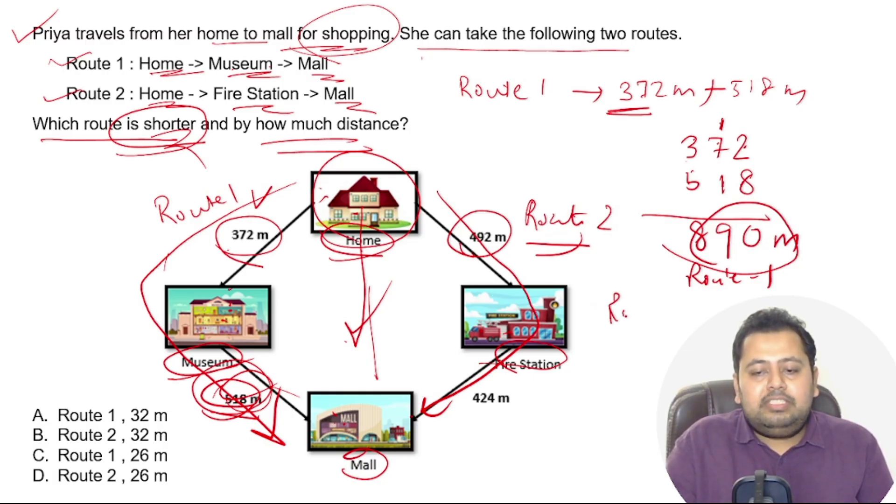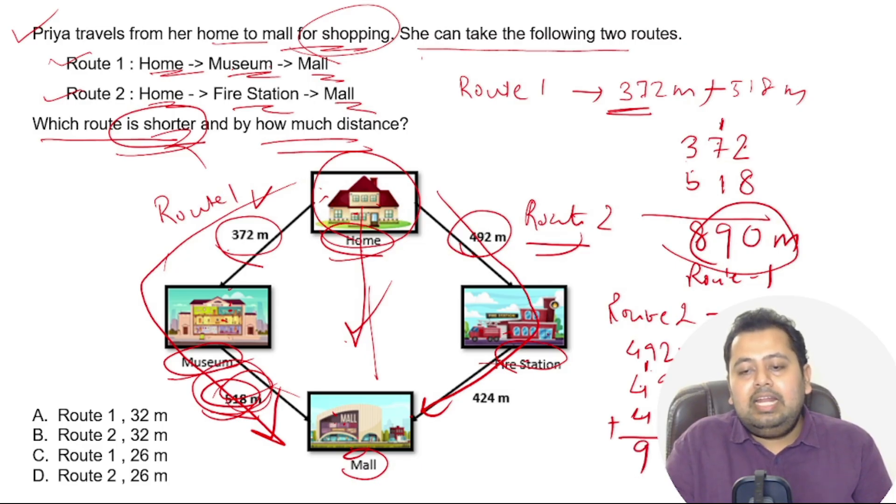Now let's go to route number 2. If she takes route 2, she's traveling from home to fire station which is 492 meters and then from fire station to mall which is 424 meters. If she's taking both this route, you'll just have to add it: 492 plus 424. 2 plus 4 is 6, 9 plus 2 is 11, so 1 carries over, 4 plus 4 is 8 plus 1 is 9. So she will be traveling 916 meters.